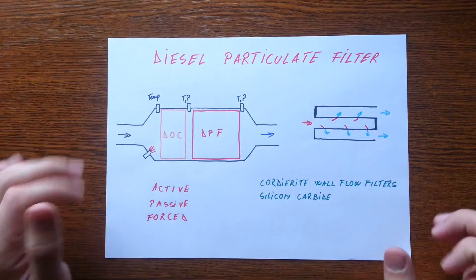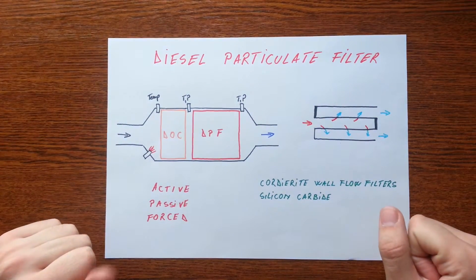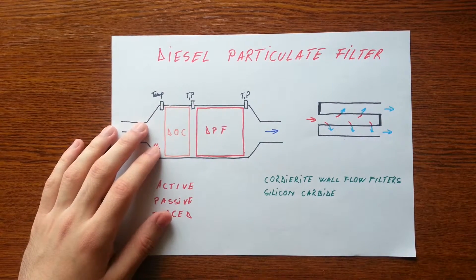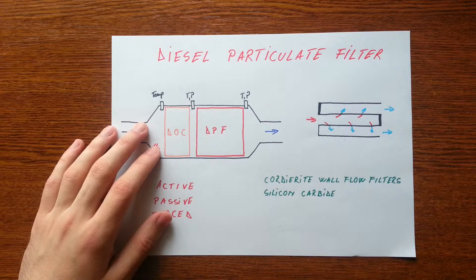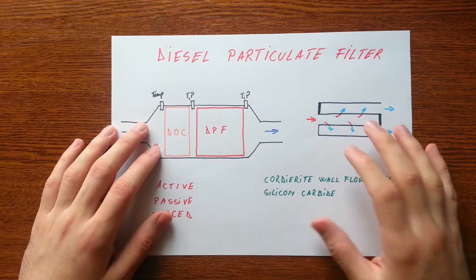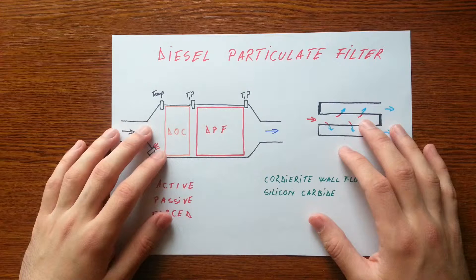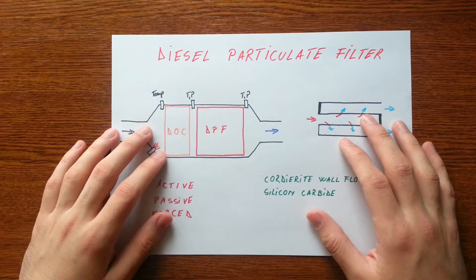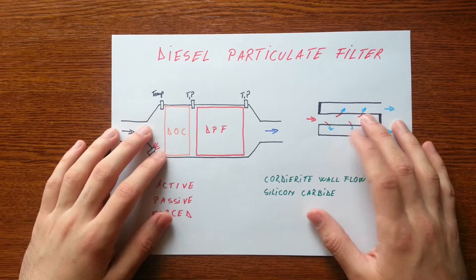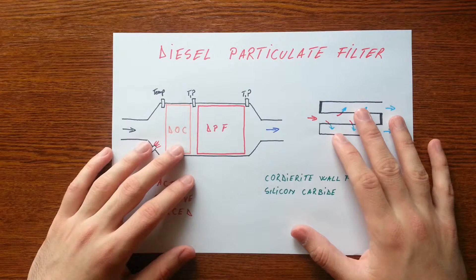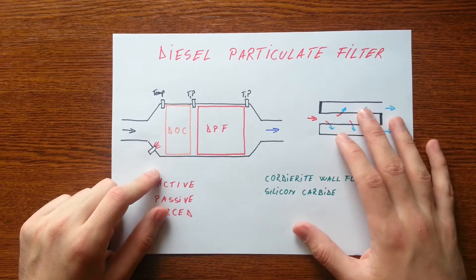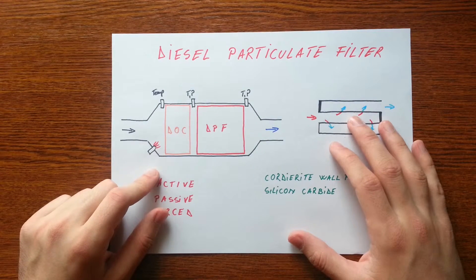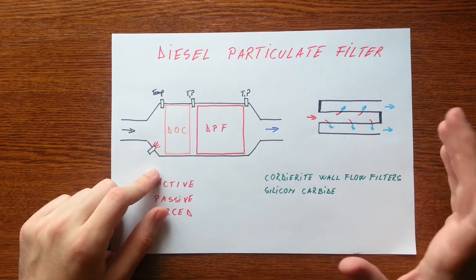Hey guys, so today we have diesel particulate filter or DPF, which has the simple role to trap harmful exhaust particulate matter from diesel engines. The emission of particles is due to the incomplete combustion of fuel, and this problem can be eliminated by optimizing the injection and combustion process, called pre-combustion treatment, or with exhaust treatment called post-combustion.